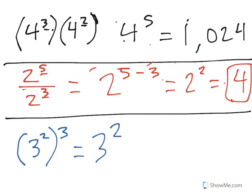So 3 to the 2 times 3, that's equal to 3 to the sixth power. And when we solve that out, we get a total of 729.